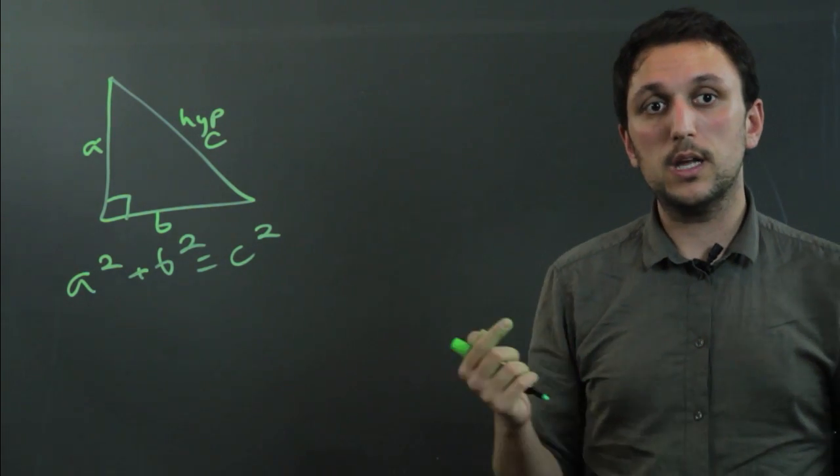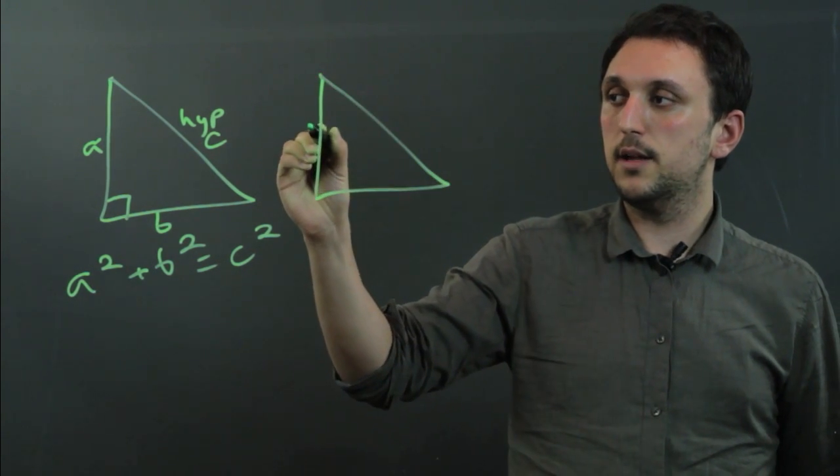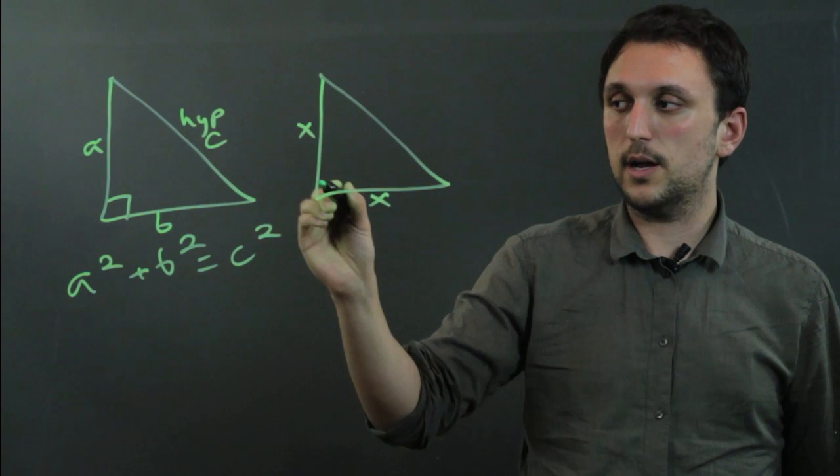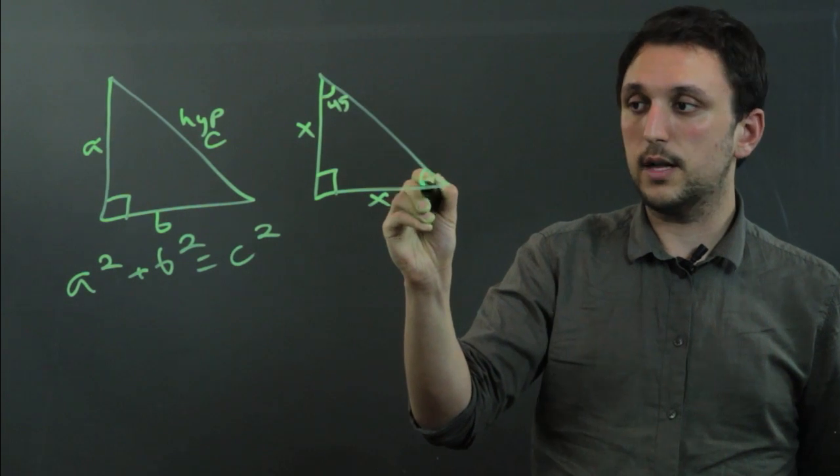And a right triangle can also be isosceles, or an isosceles right triangle, and that would mean that this side here, X, and this side here, X, are the same, which would make this angle 45, and this angle 45.